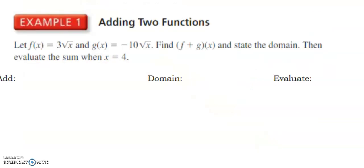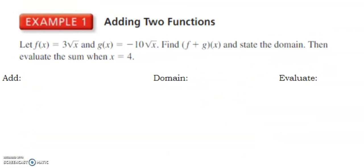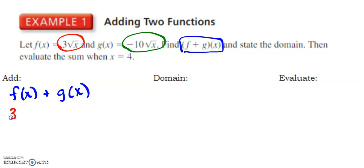All right, so let's try one. Adding two functions. Here I have f(x) = 3√x and g(x) = -10√x. This says find (f + g)(x). So remember, f + g of x just means take f(x) + g(x). So I'm going to take 3√x plus a negative 10√x. Put those together.